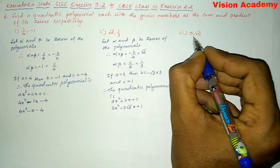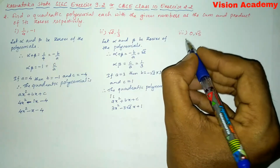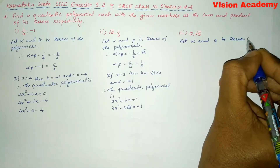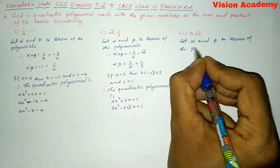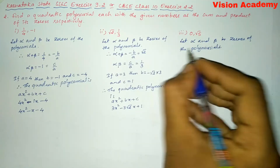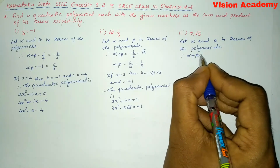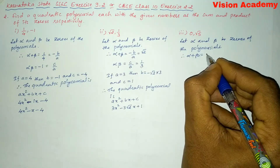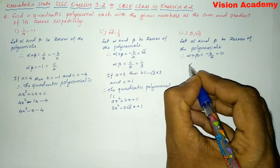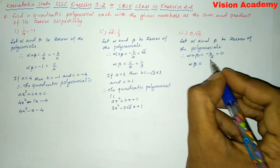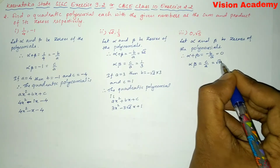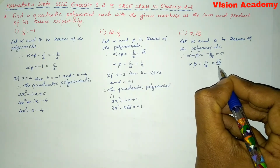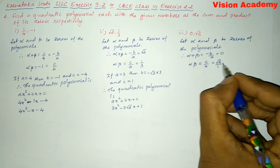Now let us move on to Roman number three: zero comma square root of five. Again, let alpha and beta be the zeros of the polynomial. Alpha plus beta, as per the question, the given sum is equal to zero — that is minus B by A equals zero. And the product of zeros, alpha into beta, equals C by A, which is given as square root of five, or square root of five by one.